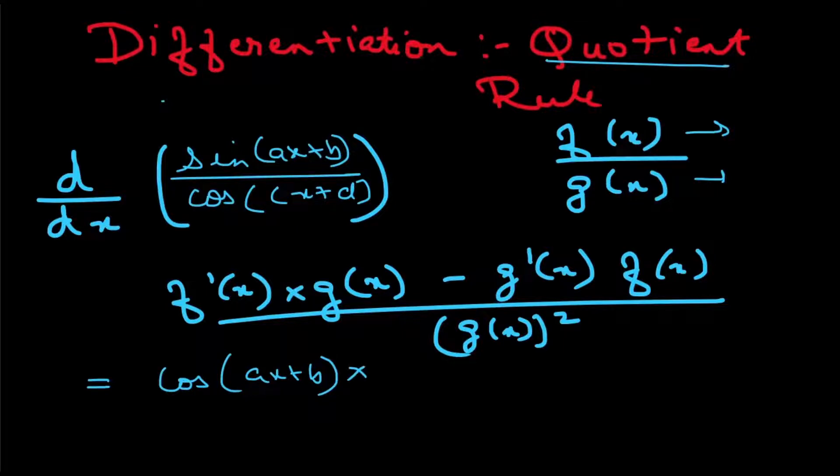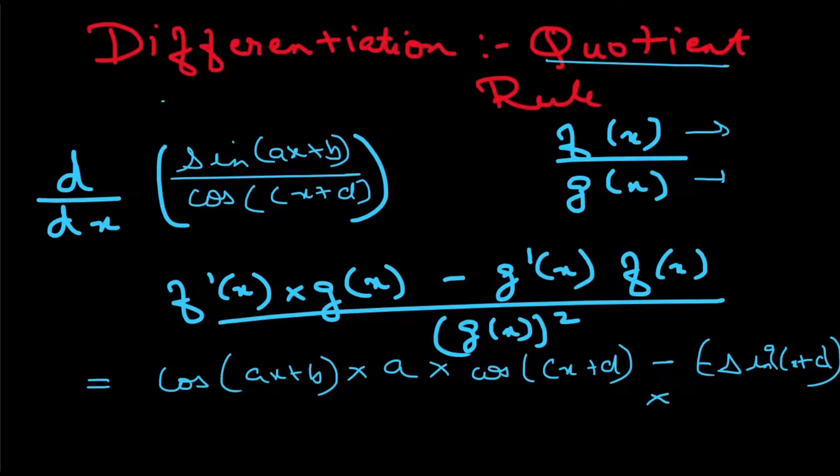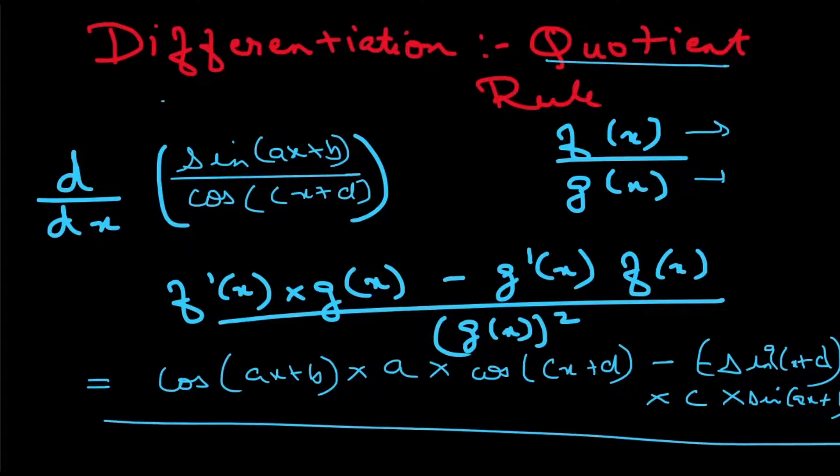So over here ax + b's derivative would be a, and then I'm going to multiply it with my denominator which is cos(cx + d), and then I'm going to subtract the denominator's differentiation. Cos derivative would be minus sine(cx + d) times c times the numerator which is sine(ax + b), and I'm going to divide all of this by the denominator which is cos(cx + d) whole square.